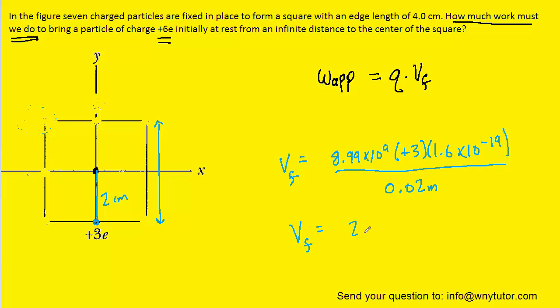When we do that, we get 2.1576 times 10 to the minus 7 volts. This represents the potential at the center of the square, which will indeed be the final potential as we move the charge from infinity all the way to the center.